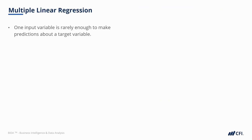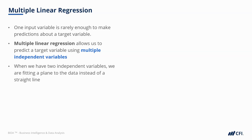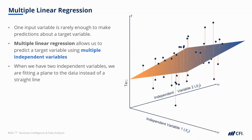One input variable is rarely enough to make good predictions about a target variable, so we can explore multiple linear regression, which allows us to predict a target variable using multiple independent variables. With two explanatory variables, it becomes more difficult to visualize — we use a plane through a 3D field. The plane is summarized by an equation with one additional parameter, where x1 and x2 both have their own coefficients defining how those variables affect the output y. In summary, multiple linear regression helps us predict a target variable using more than one input.